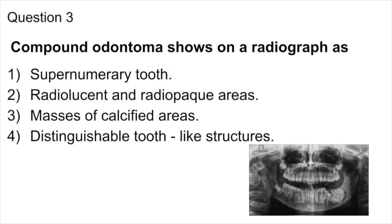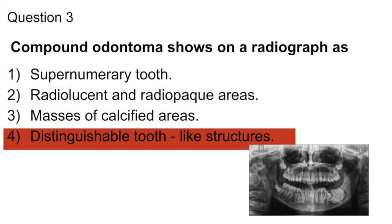Question 3. The compound odontoma shows on a radiograph as: supernumerary, radiolucent and radiopaque areas, masses of calcified areas, or distinguishable tooth-like structures. The answer is distinguishable tooth-like structures. Compound odontoma occurs in the anterior maxilla and may be associated with an unerupted tooth. Odontoma is of two types: compound odontoma and complex odontoma.